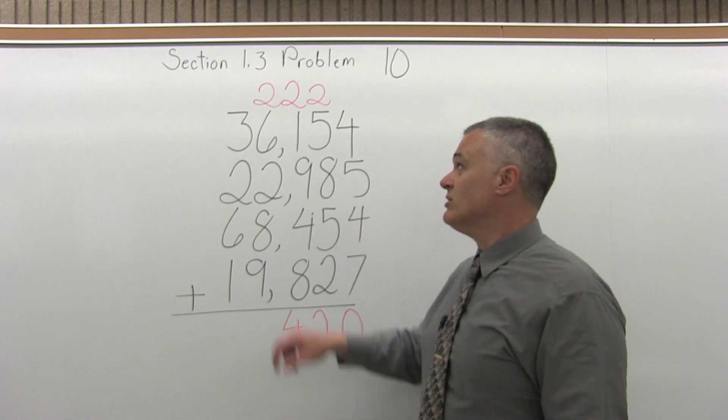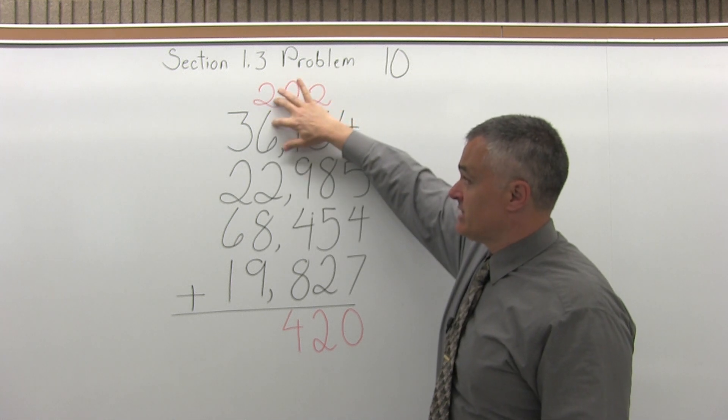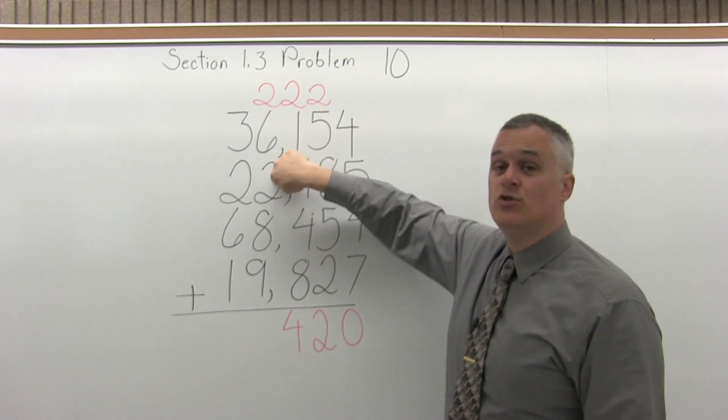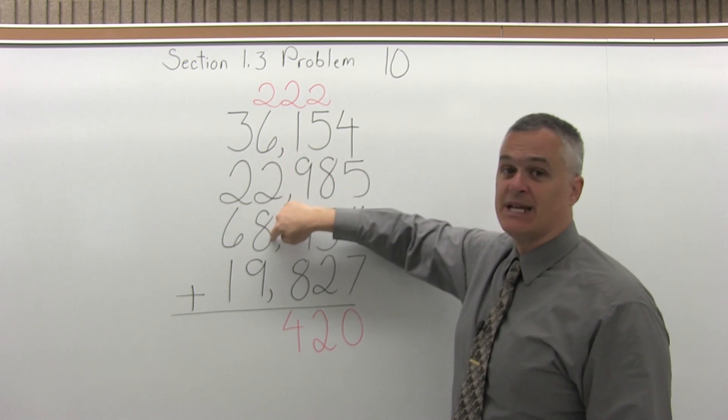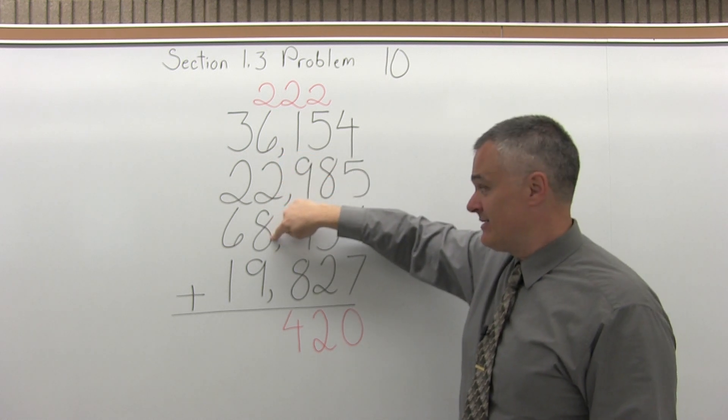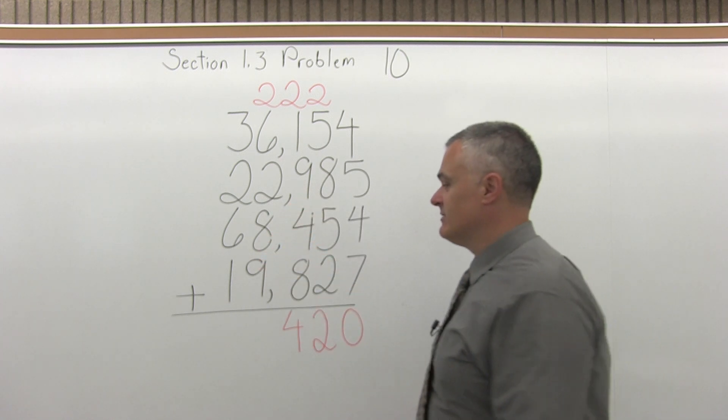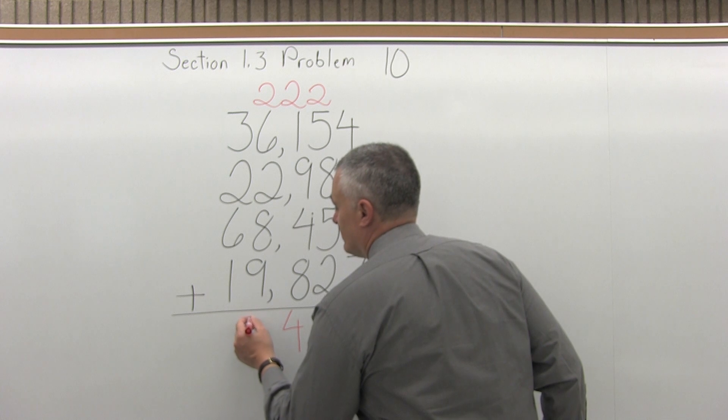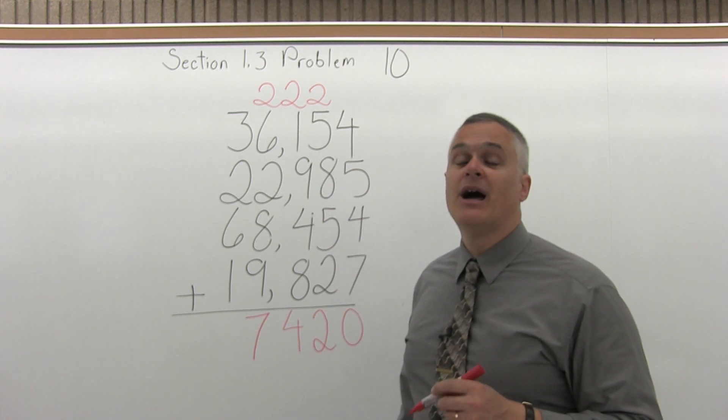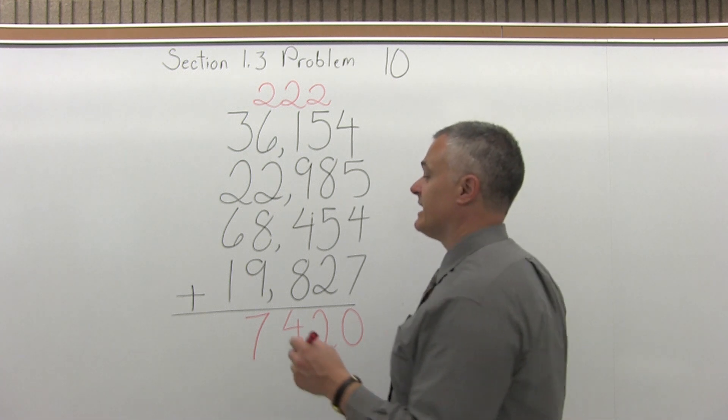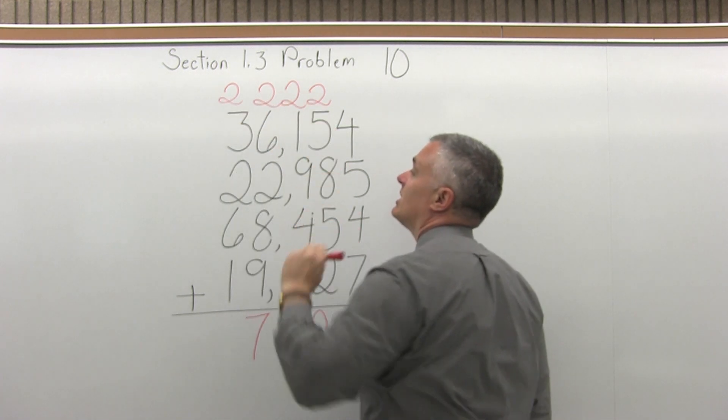And then add those, 2 plus 6 plus 2 plus 8 plus 9. So start with 2 plus 6, that's 8. 8 plus 2 more is 10. 10 plus 8 is 18. 18 plus 9 is 27. So I write the 7 from the 27 under the column of digits that I just added. I take the 2 from the 27, carry it to the top of the next column of digits to the left.